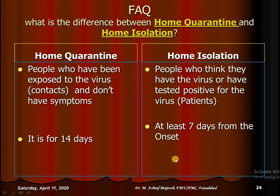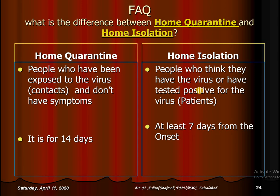Frequently asked questions: What is the difference between home quarantine and home isolation? Home quarantine is for people who have been exposed to the virus and had contact but do not have symptoms — they are liable to home quarantine for strictly 14 days. Home isolation is for people who think they have the virus or have tested positive — they should be isolated at home for at least 7 days from the onset of symptoms.